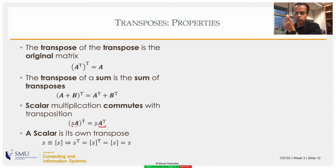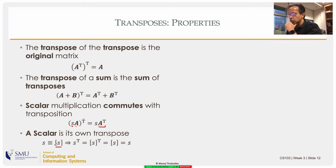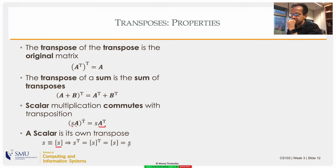An important point: a scalar is its own transpose, because we think of a scalar as a one-by-one matrix. If you think of s as a one-by-one matrix and take the transpose, the main diagonal is that one element, and the matrix s transpose equals matrix s, which by definition equals the scalar. So a scalar is its own transpose, and we can actually use this in some proofs, which we will do today.